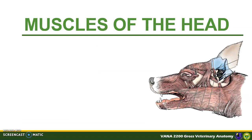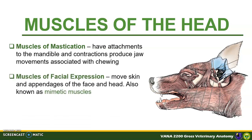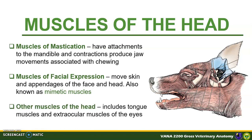Let us begin with the muscles of the head. For easier familiarization, most anatomy references group the musculature of the head based on their role or main action. First, we have the masticatory muscles — these muscles are powerful for the mastication of food, and normally they have attachments to the mandible, with contractions producing jaw movement associated with chewing. Next are the muscles of facial expression or the mimetic muscles, which move the skin and appendages of the face and head, such as the ears, for the animal to show any reaction like aggression. Other muscles of the head include the tongue muscles and the extraocular muscles of the eye. We will discuss each group in the next slides.